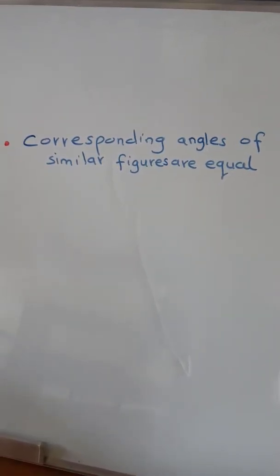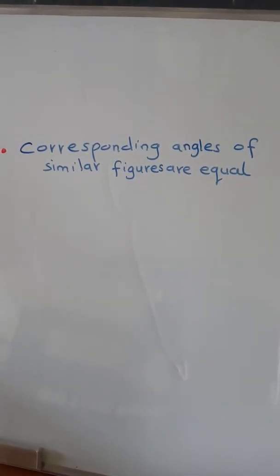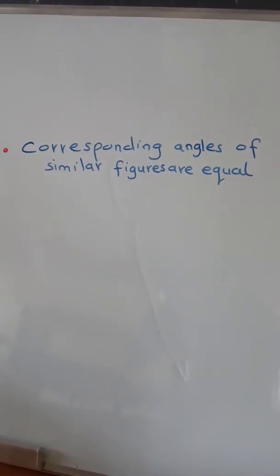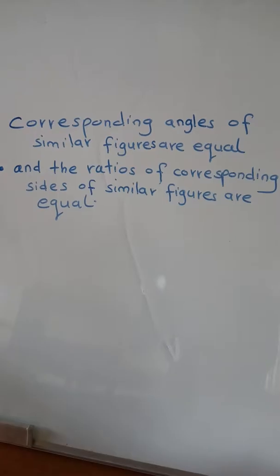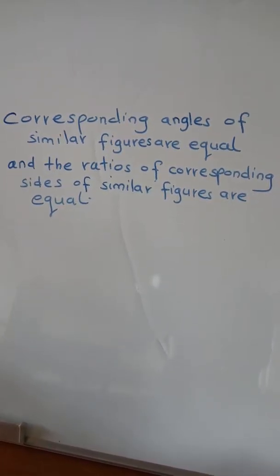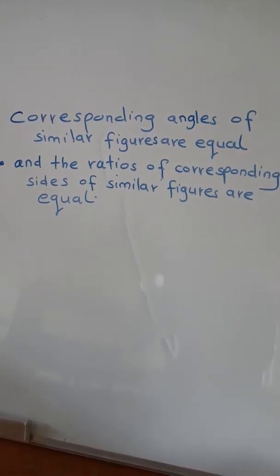Corresponding angles of similar figures are equal, and the ratios of corresponding sides of similar figures are equal.